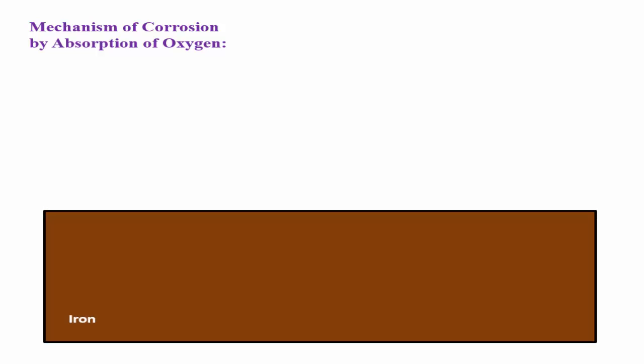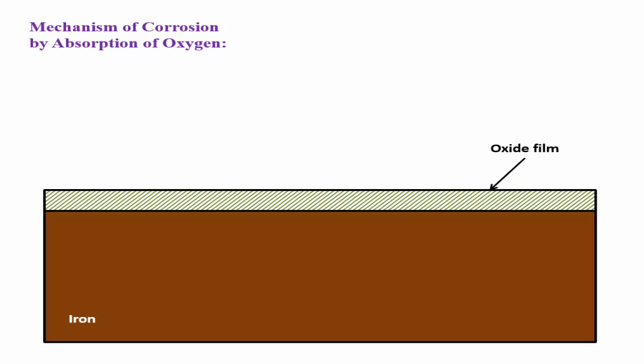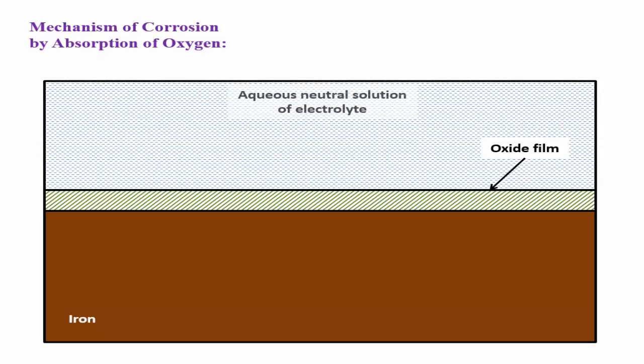Consider an iron tank coated with an oxide film and covered with an aqueous neutral solution of electrolyte. Absorption of oxygen occurs in neutral or alkaline solutions.